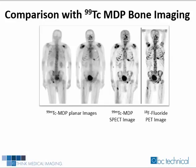Shown on this slide are several images of the same patient. From left to right are technetium-99M MDP planar bone scan images, a technetium-99M MDP bone SPECT image, and a PET F-18 bone scan image. As expected, the SPECT scan is more sensitive than the planar images, but the PET F-18 bone scan is significantly more sensitive for abnormalities compared to the technetium-99M MDP bone SPECT image.